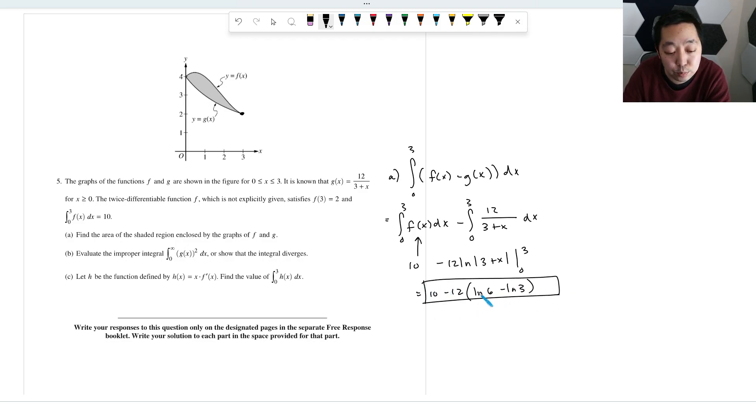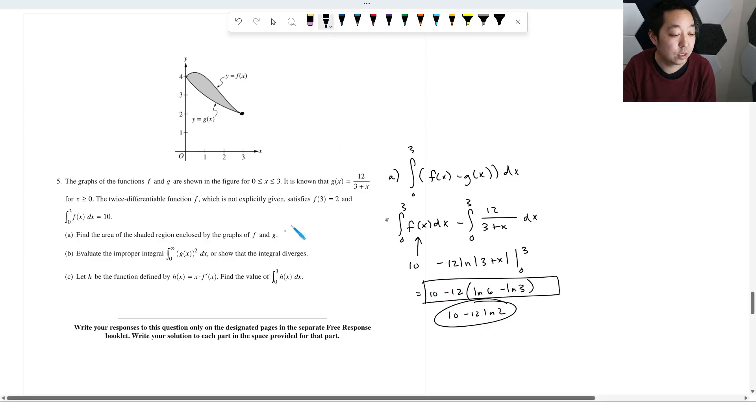And you can just honestly leave it like that. If you want to be extra picky, ln of six minus ln of three is ln of two because six divided by three is two. So you could make that 10 minus 12 ln of two if you want to be tricky. But honestly, I think they encourage you to just leave it like that instead of trying to simplify.